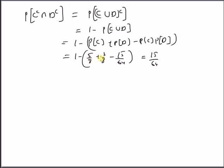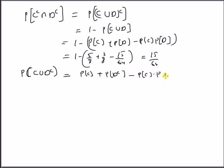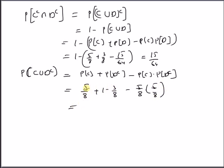Next is probability of C∪D complement, which equals probability of C plus probability of D complement minus probability of C times probability of D complement. This is 5/8 plus (1 minus 3/8) minus (5/8 times 5/8), giving 10/8 minus 25/64, which equals 55/64.